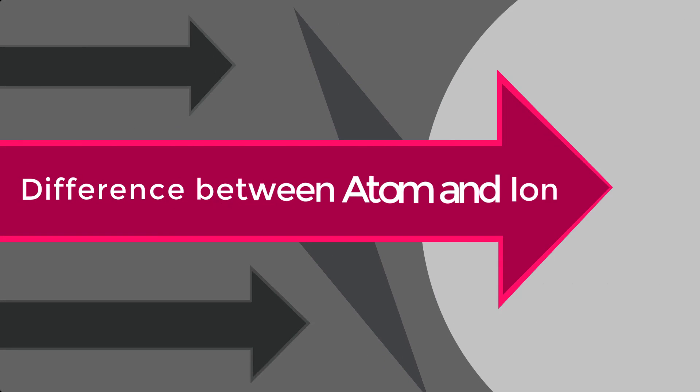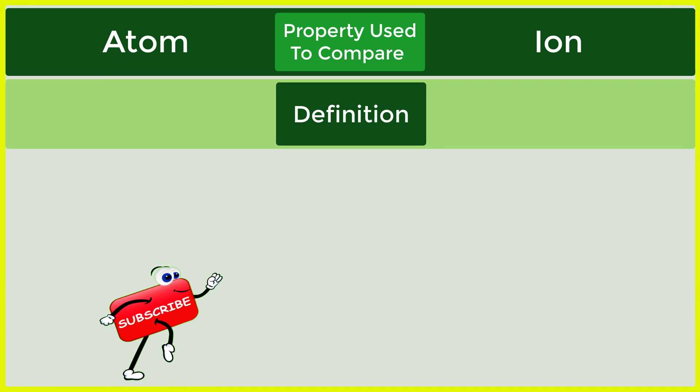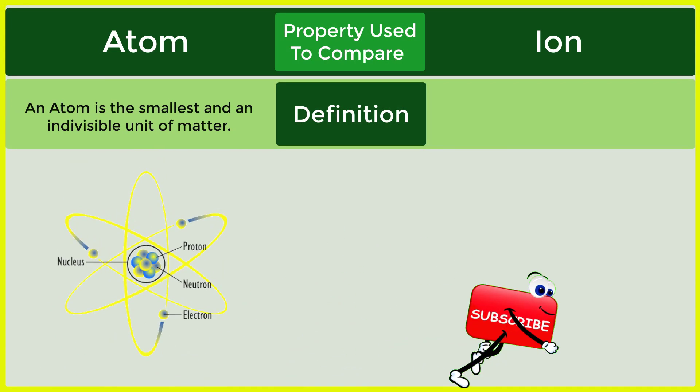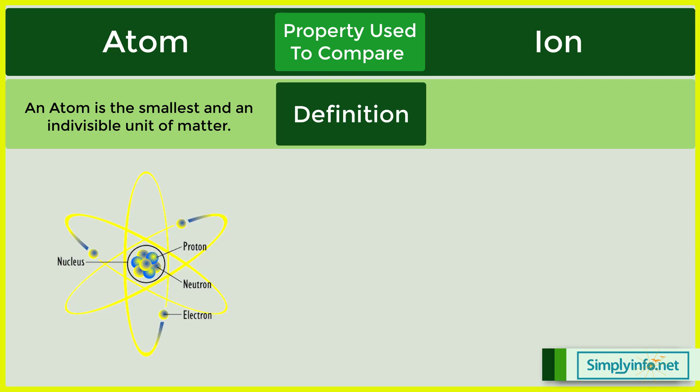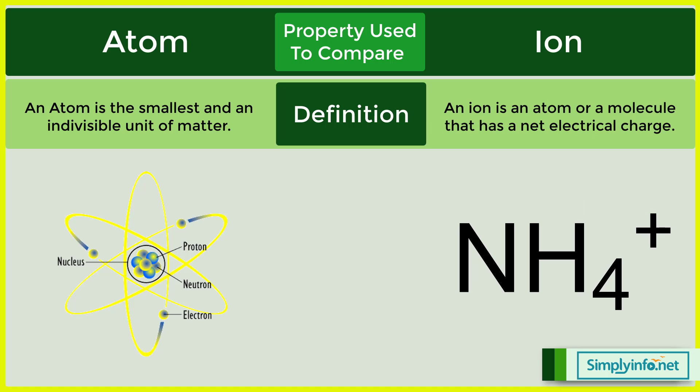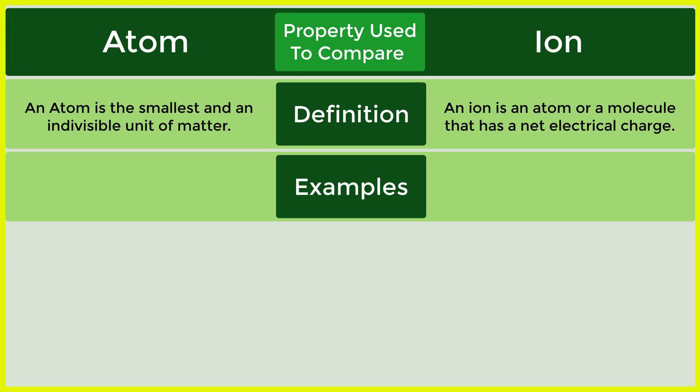Difference between atom and ion. Definition: Atom - an atom is the smallest and an indivisible unit of matter. Definition: Ion - an ion is an atom or a molecule that has a net electrical charge.